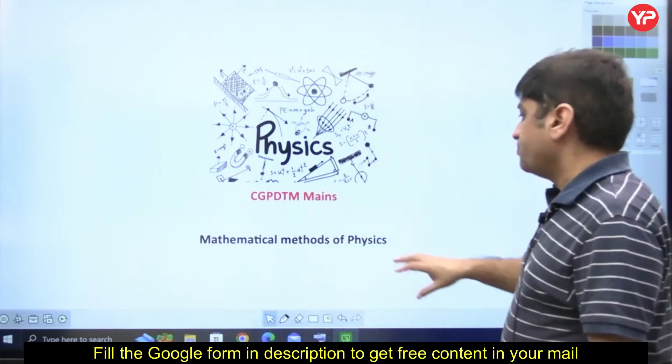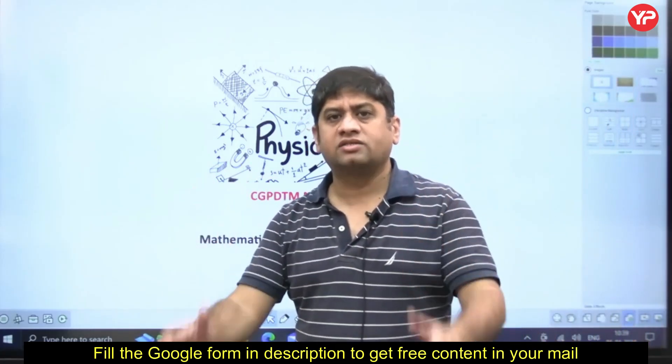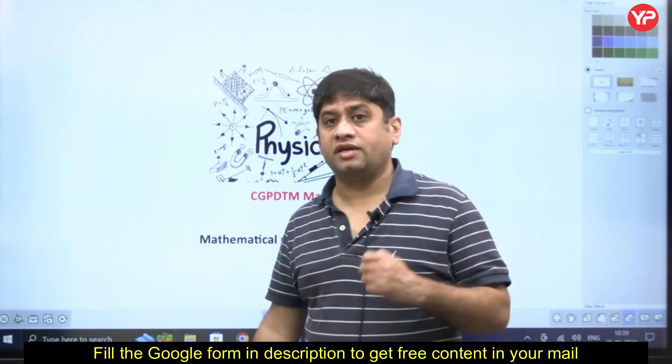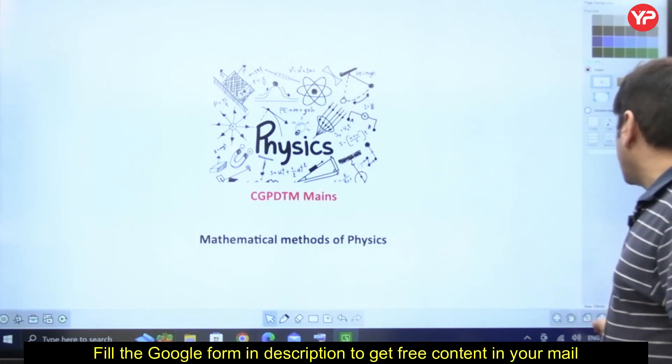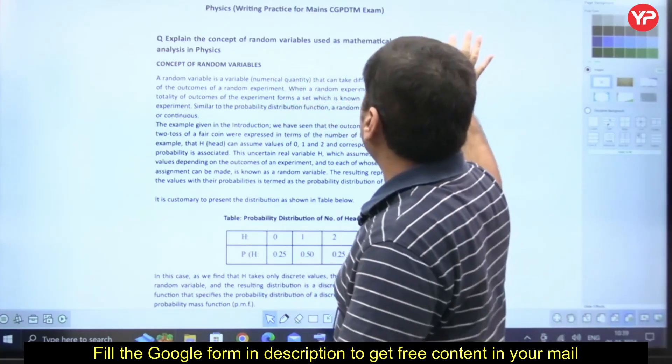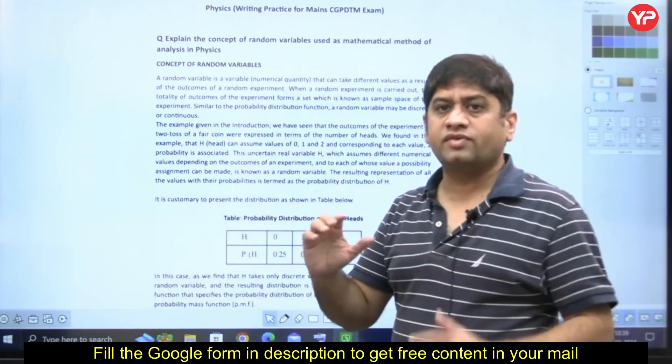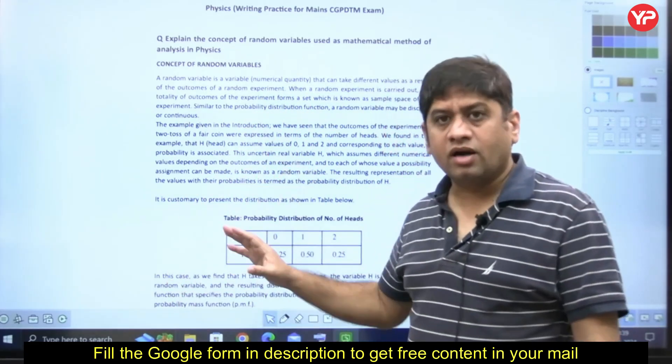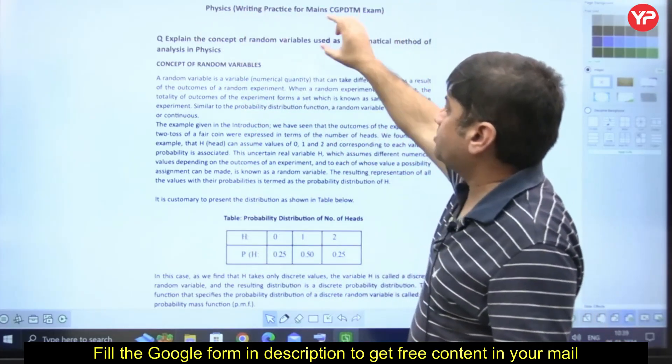I'm not an expert in physics, so the mentors have provided the content which I'll share with you. This is related to mathematical methods of physics, one of the topics in the CPDTM mains physics syllabus. The question asks to explain the concept of random variables used as mathematical methods of analysis in physics.